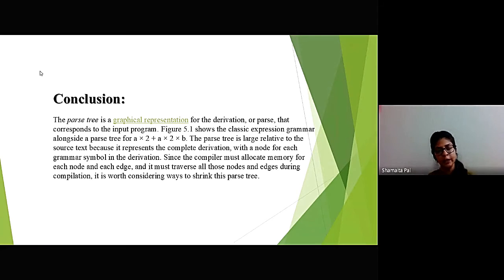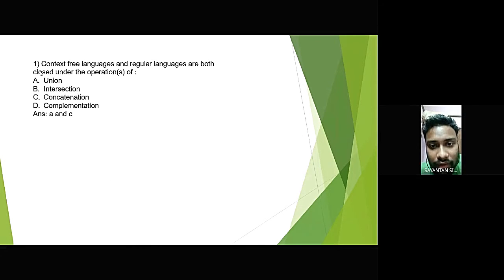The symbol can be terminal or non-terminal. The root of the parse-tree is the first symbol. Parse-tree follows the precedence of operators. Context-free languages and regular languages are both closed under operations. We all know that it is always closed under union and concatenation operations.